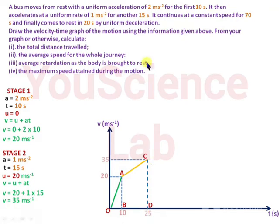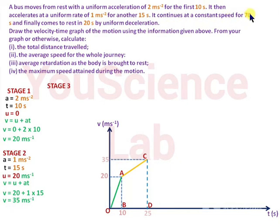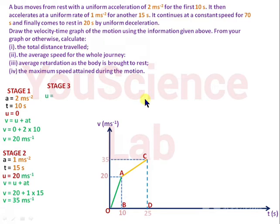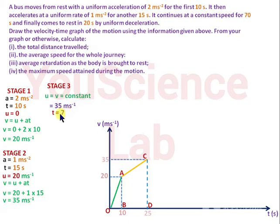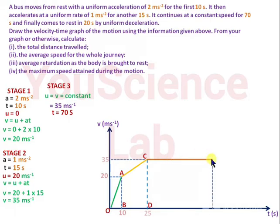Trapezium ACDB represents the motion of the car in stage 2. In stage 3, the car continued at a constant speed of 35 meters per second for 70 seconds, so the final velocity equals the initial velocity. Draw a straight line CE to represent the constant velocity, and complete rectangle CEFD to represent the uniform motion of the car.